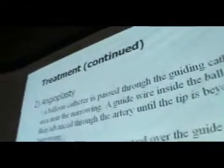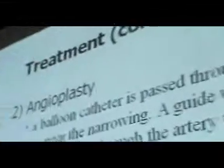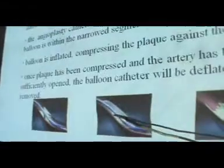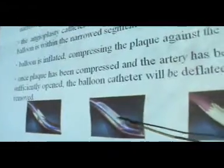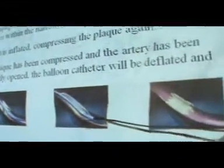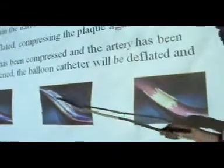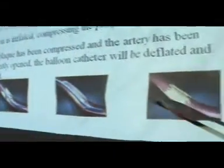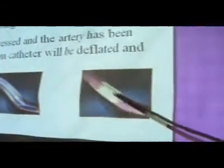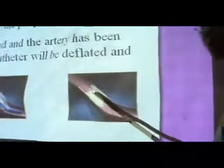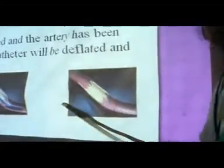Angioplasty involves a balloon-like structure that is injected into the blood vessel where fat accumulation has occurred. At the site of fat agglutination, the balloon is burst, and the coronary artery is freed so that blood circulation is restored.